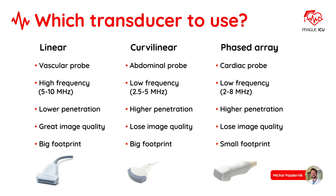Which transducer can we use for lung examination? There is the linear probe, the vascular probe, which is high frequency — it has lower penetration but great image quality. Then we have the curvilinear probe, the abdominal probe, which is low frequency — it has higher penetration but loses image quality.